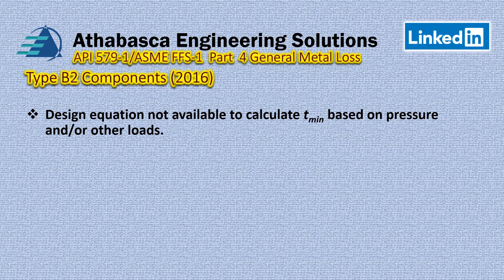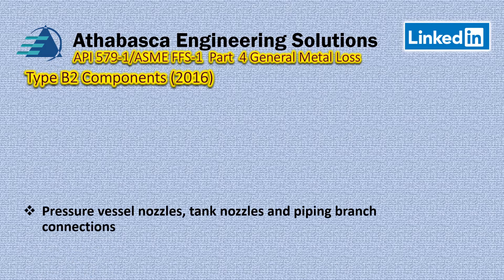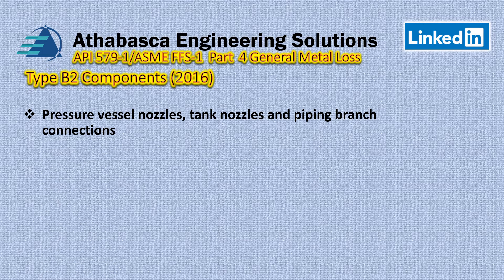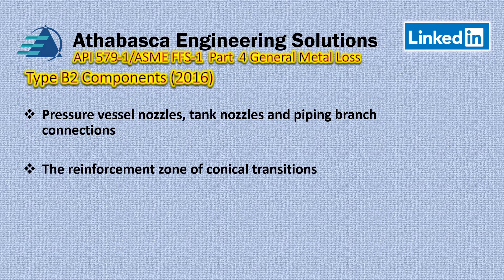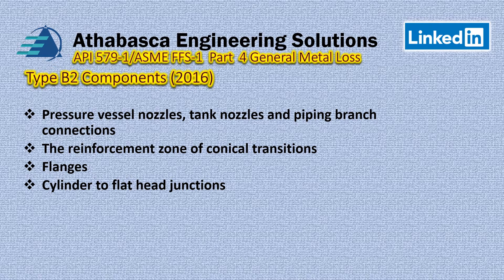For Type B2, design equations are not available to calculate T-minimum based upon pressure and loads. There is really no design code procedure available for doing that analysis. Specific examples include pressure vessel nozzles, tank nozzles, and piping branch connections designed by rules, as well as the reinforcement zone of conical sections, flanges, cylinder-to-flat-head junctions, and integral tube sheet connections.